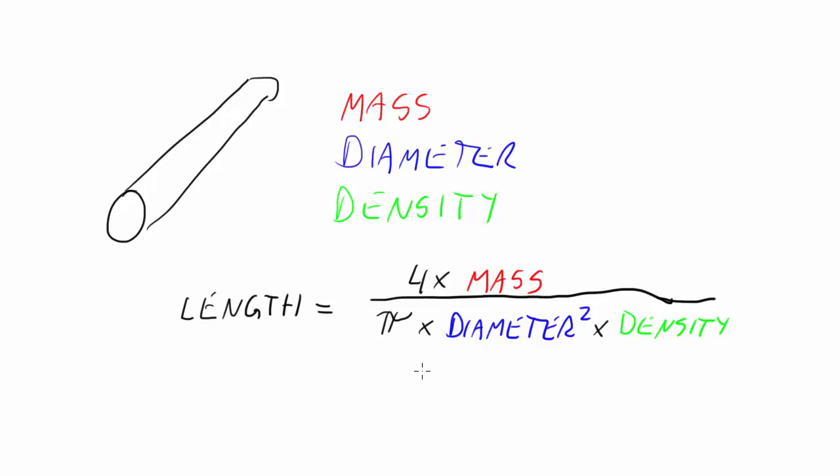And so we use this equation together with an uncertainty budget for the mass measurement for how uncertain that is, an uncertainty budget for the diameter measurement and an uncertainty budget for the density measurement, to then figure out what the uncertainty of our overall length determination is.